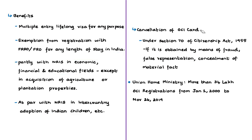The central government's cancellation power is governed by Section 7-D of the Citizenship Act of 1955. The central government can cancel OCI registration if it is satisfied that the registration was obtained by fraud, false representation, or concealment of any material fact. A notable recent example is that the OCI card of writer Aatish Taseer was cancelled by the central government based on this provision, which was discussed in detail in the 12th November 2019 analysis video.